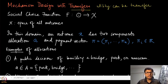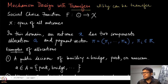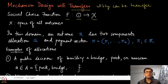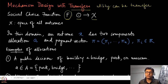Let us look at what the social choice function is and how we can design different components of that social choice function. The social choice function maps the type profile — the Cartesian product of all type sets — into what is known as script X, the space of all outcomes. We have deliberately used uppercase F to denote the social choice function, because we will be using lowercase f for a different purpose.